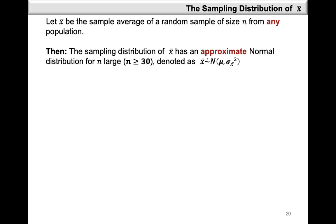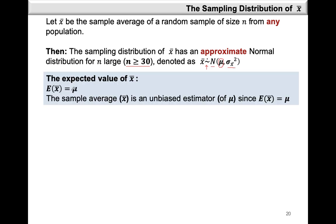We can now define the sampling distribution of x-bar. The sampling distribution of x-bar is approximately normal for a large sample, where large sample implies a sample size of at least 30. In shorthand notation, x-bar is approximately normal with mean mu — the same as our population mean — and variance sigma-squared_x-bar. The expected value of x-bar equals the population mean mu, so x-bar is an unbiased estimator of mu.